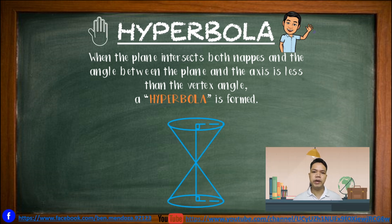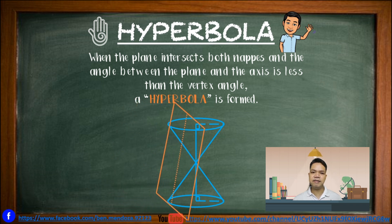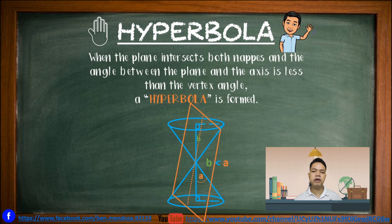Hyperbola. When the plane intersects both nappes and the angle formed by the plane and the axis is less than the vertex angle, the conic section formed is what you call a hyperbola.